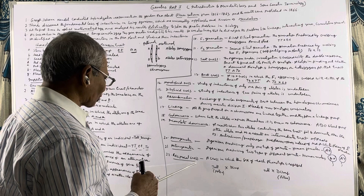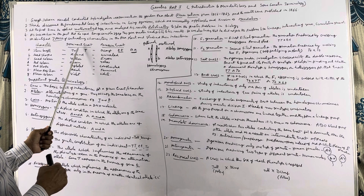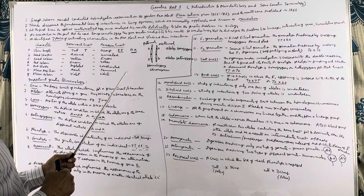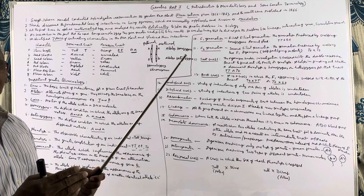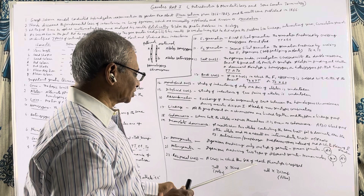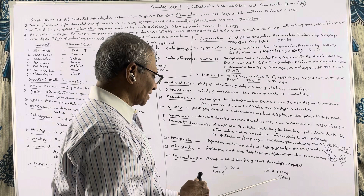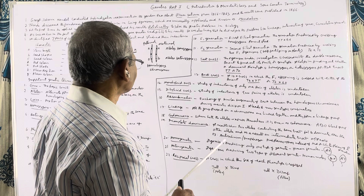Reciprocal cross: suppose in a cross involving tall and dwarf plants, pollen is taken from the tall plant and used in fertilizing the eggs of the dwarf plant. In the reciprocal cross it is reversed — pollen grains are taken from the dwarf plant and used in the tall plant. So a reciprocal cross means a cross in which the sex of each phenotype is reversed.